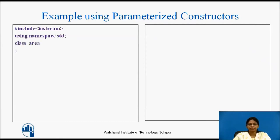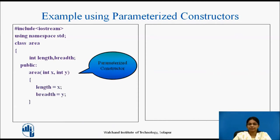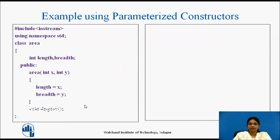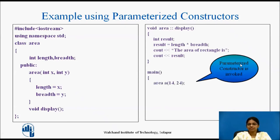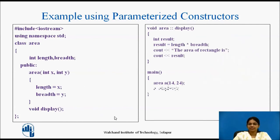Another example: class 'area' has data members length and breadth. Under the public section, a parameterized constructor 'area' accepts parameters x and y, initializing length to x and breadth to y. A member function 'display' finds the area of the rectangle and displays the result. In main, an object is created and two parameters — 14 and 24 — are passed, invoking the parameterized constructor, which initializes length to 14 and breadth to 24 for object a. Object a then calls the display function using the dot operator, which calculates and displays the area of the rectangle.